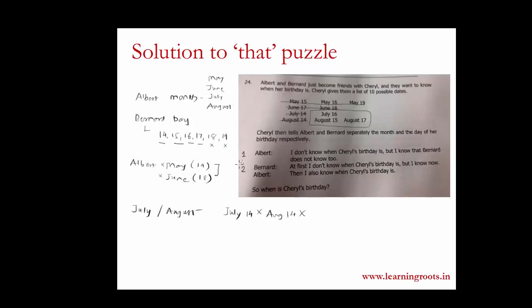And now comes the closure part when Albert is saying then I also know when her birthday is. Now this can happen only if he is told that her birth month is July because if Albert is told that her month is August he still wouldn't know her birthday because it can be either 15 or 17. But in the third statement after Bernard's statement he is saying that he is pretty sure what the birthday is. It means that there has to be only one option with Albert which is July so that he can confidently say that he knows her birthday.